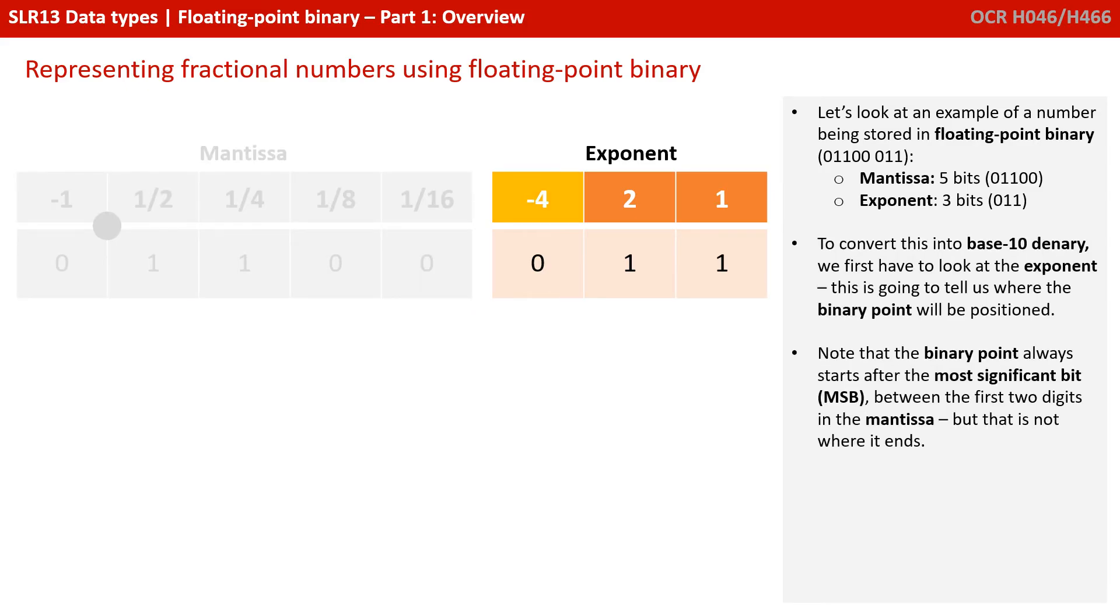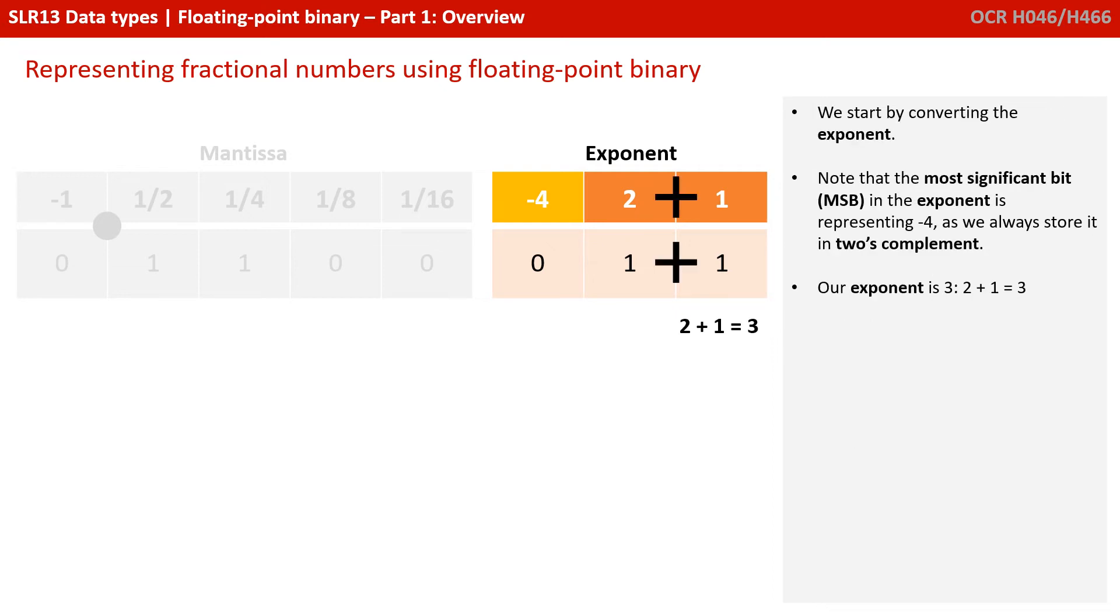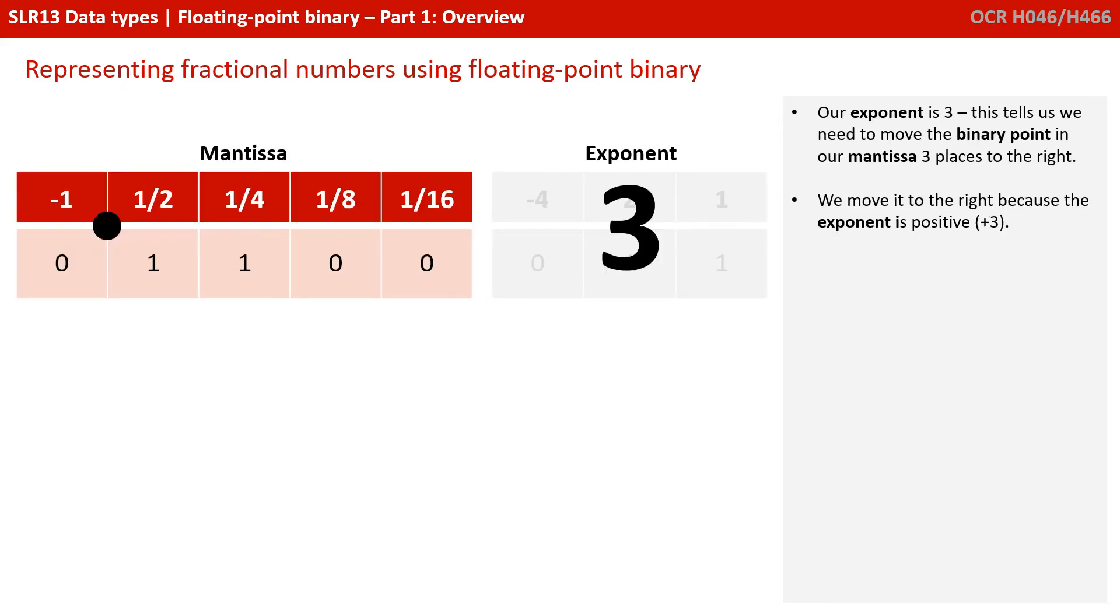To convert this into base 10 denary, we first have to look at the exponent, as this is going to tell us where the binary point is going to need to end up. Note that the binary point always starts after the most significant bit in the mantissa, between the first two digits. But that's not where it's going to end up. We're going to move it based on this exponent. So we start by converting the exponent. Now, note the most significant bit is representing negative 4 because we store it in 2's complement. So our exponent is 3. We've got a 1 in the 2 column and a 1 in the 1 column. 2 plus 1 is 3.